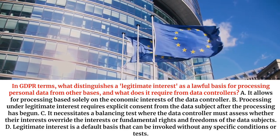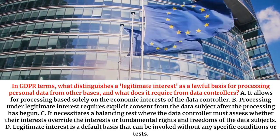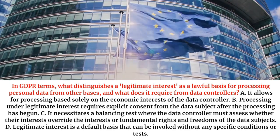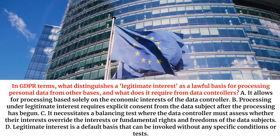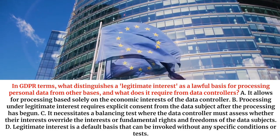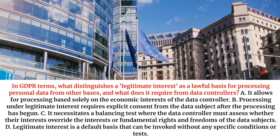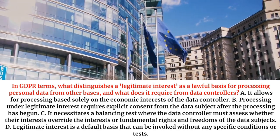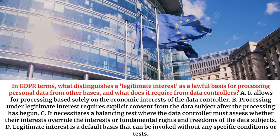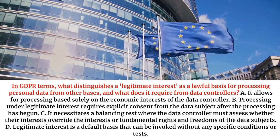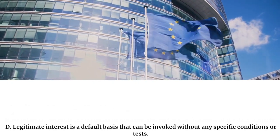A. It allows for processing based solely on the economic interests of the data controller. B. Processing under legitimate interest requires explicit consent from the data subject after the processing has begun. C. It necessitates a balancing test where the data controller must assess whether their interests override the interests or fundamental rights and freedoms of the data subjects. D. Legitimate interest is a default basis that can be invoked without any specific conditions or tests.